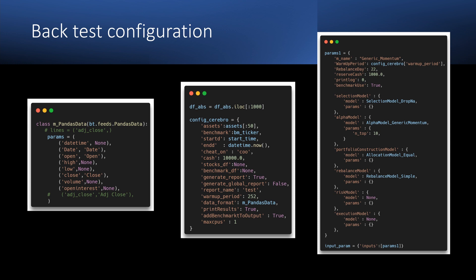Then we define our asset and our benchmark ticker, starting cash, option to trade on open, and we have to set a warmup period of our algorithm. We are going to calculate our momentum based on the last year.